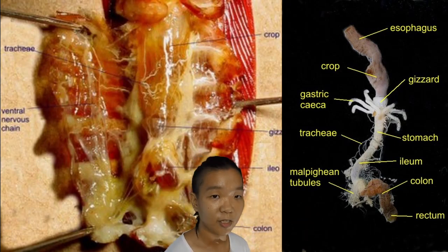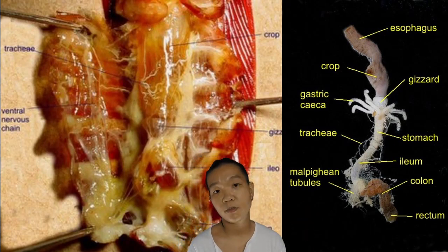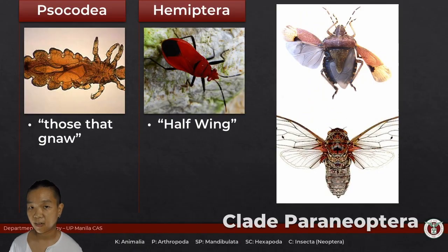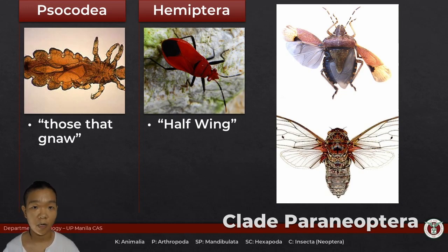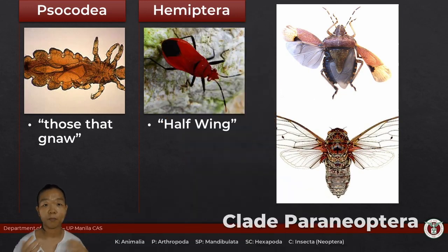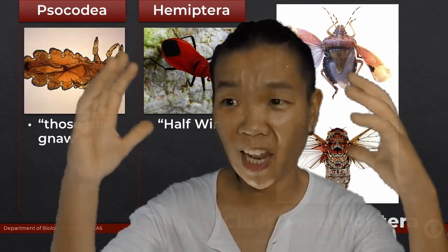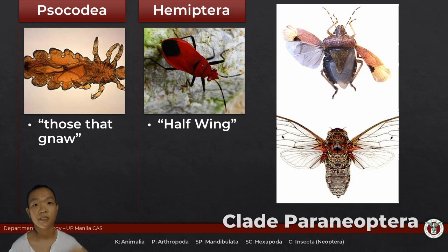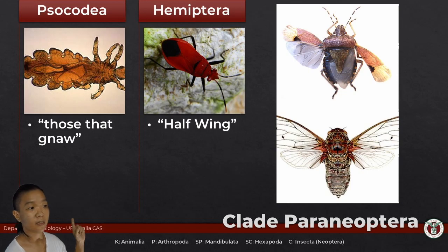Inside you'll also get to see the trachea, which connects to the spiracles — that's where gases pass through. Paraneoptera is also known as Acercaria. One of their main distinguishing features is they do not have the abdominal cerci seen in Polyneoptera — no more appendages back there. Another way to distinguish them is through their mouth parts, which are haustellate — meaning they suck. Psocodea includes bark lice, book lice, pubic lice, body lice — basically all the lice. Pediculus humanus capitis — head lice.